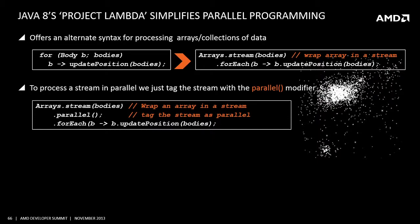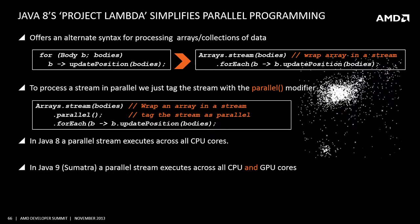In Java 8, this parallel stream will automatically dispatch across all CPU cores. We figured this was a great place to inject Sumatra. In the Sumatra JVM, the parallel stream intercepts at the parallel point but dispatches the workload across both CPU and GPU cores.